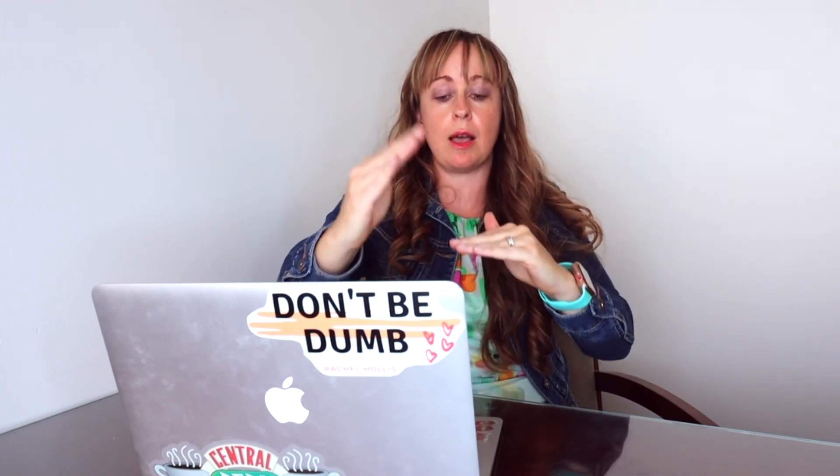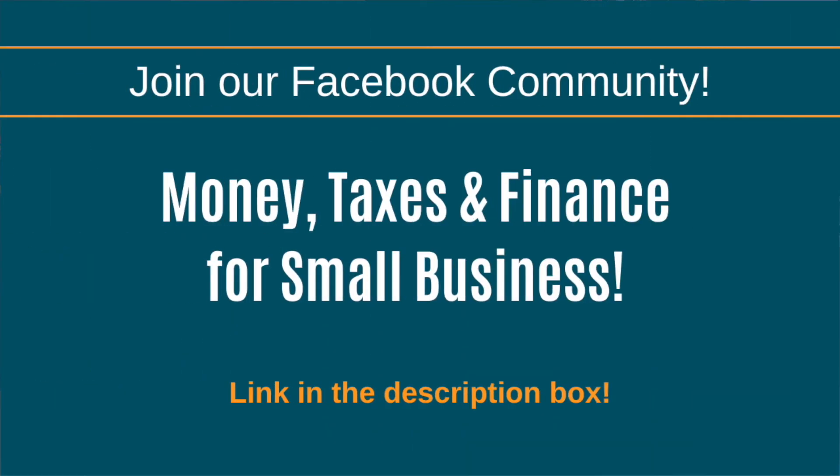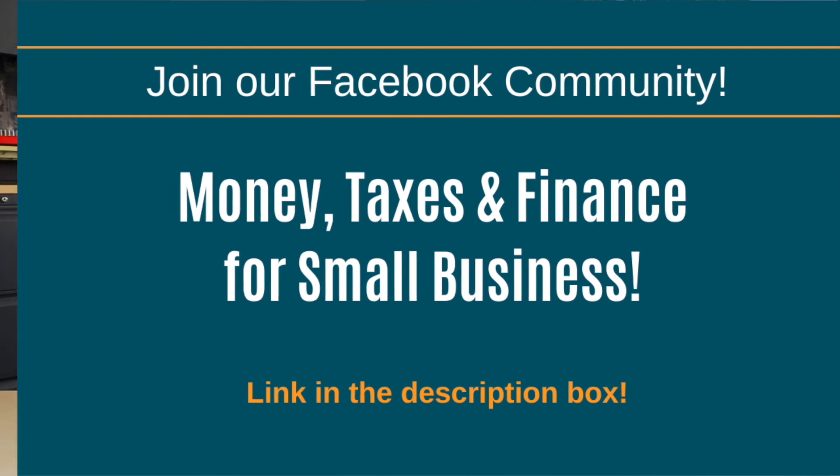Each of these numbers typically gets lower and lower. Your total income is higher than your adjusted gross income because you got to make adjustments to it. And then your adjusted gross income is higher than your taxable income because you got to account for deductions. If you have any questions about what we talked about today, go ahead and leave a comment below. I highly suggest you head on over to our Facebook community, Money, Taxes, and Finance for Small Business, because these topics are what we talk about on a regular basis and have live trainings on every week. You can access that group by clicking the link in the description box.